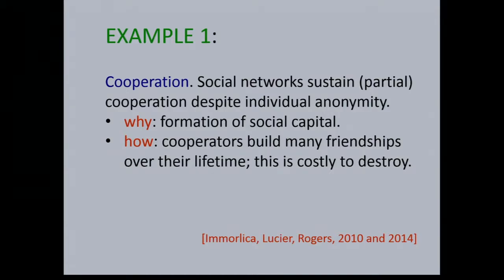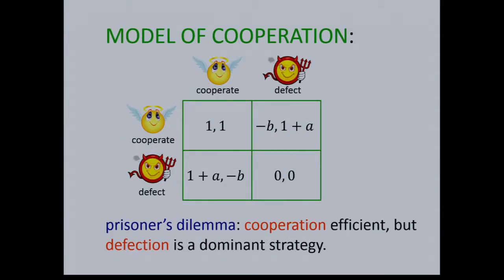This is joint work with Brendan and Brian Rogers. We model cooperation using a prisoner's dilemma game, as is standard in the economics literature. This is a bi-matrix game with two agents who can choose to cooperate or defect. Mutual cooperation gives a payoff of one to each agent. By defecting on a cooperator, you gain an amount A at a cost of B to your partner. Mutual defection has a payout of zero. Iterated deletion of dominated strategies shows the dominant strategy is for both agents to defect.